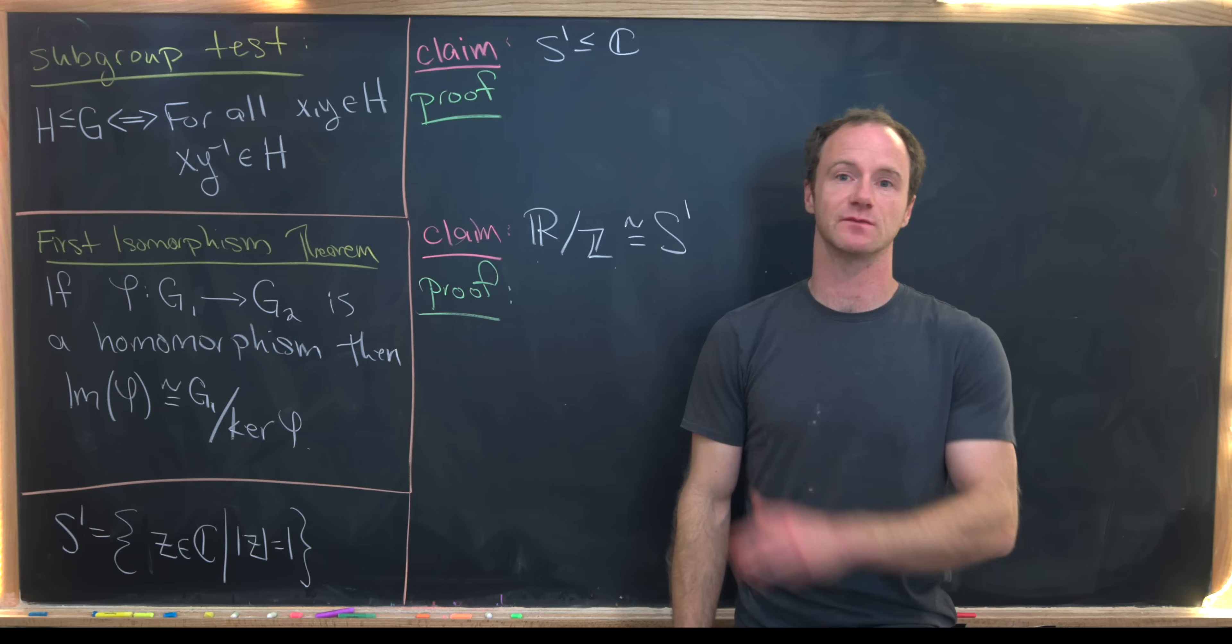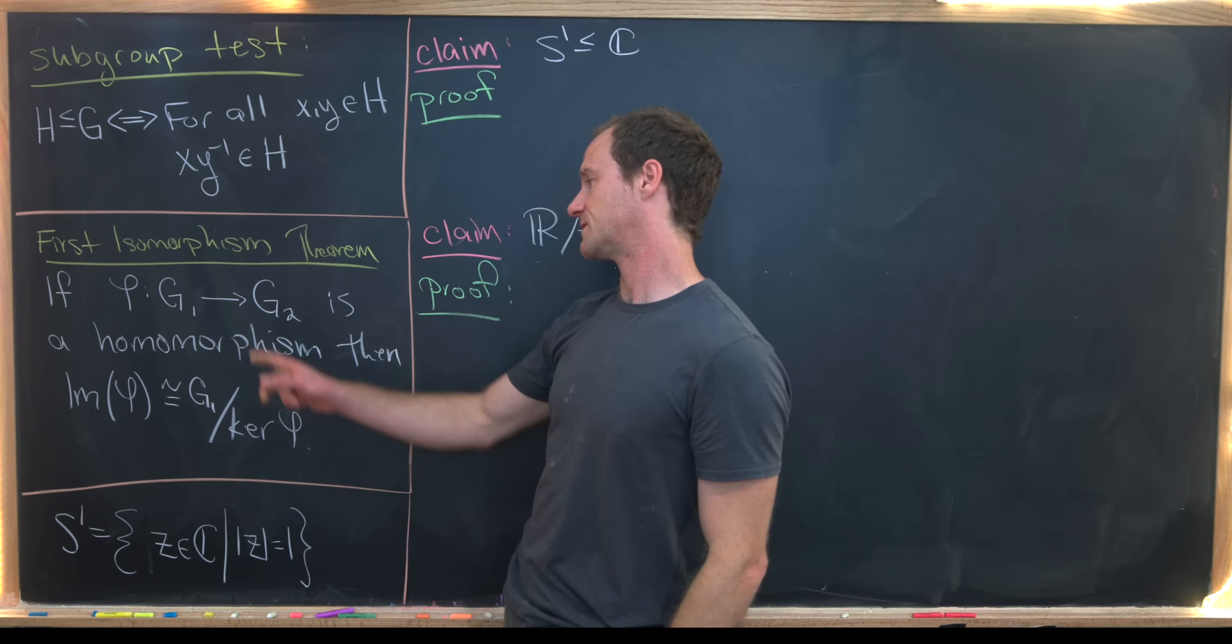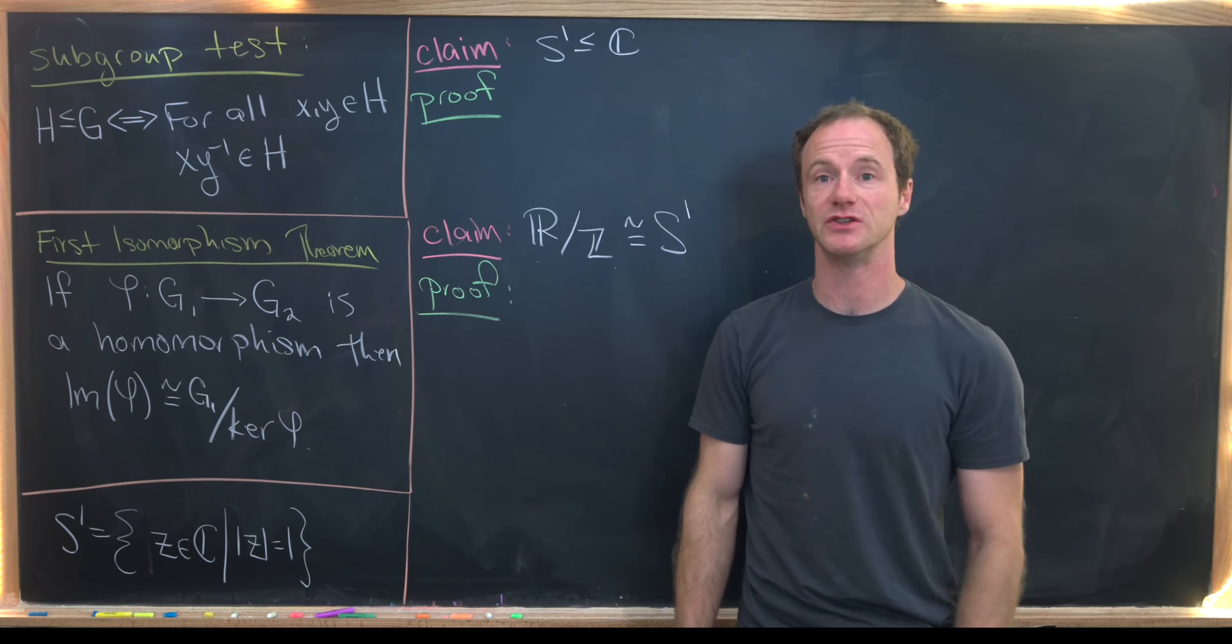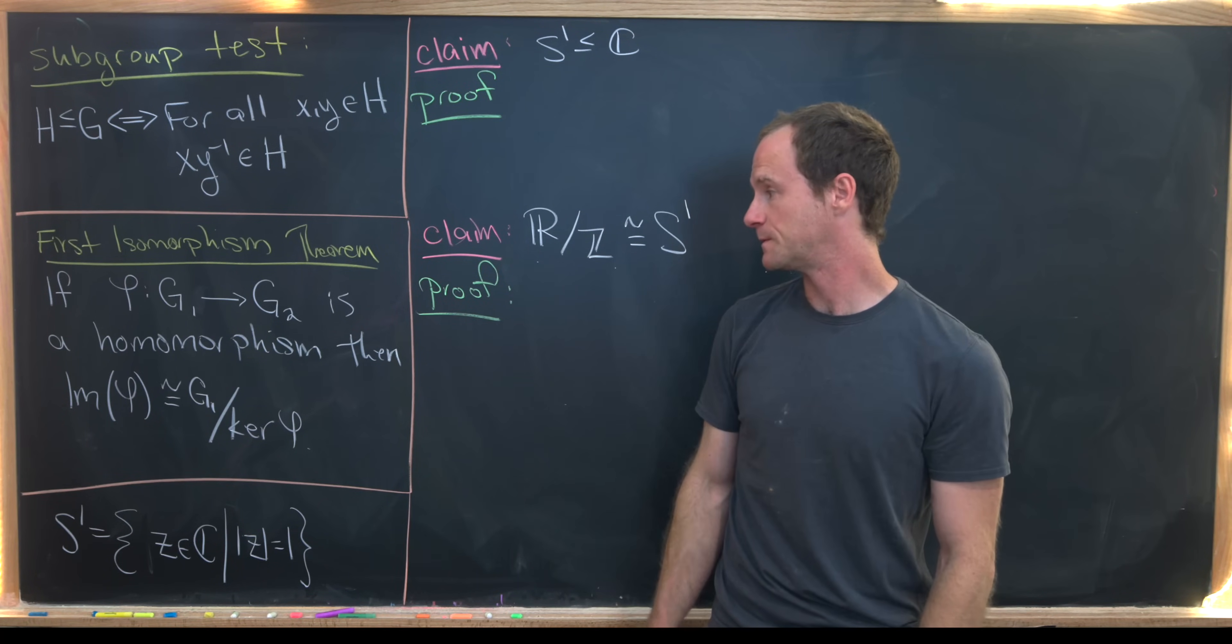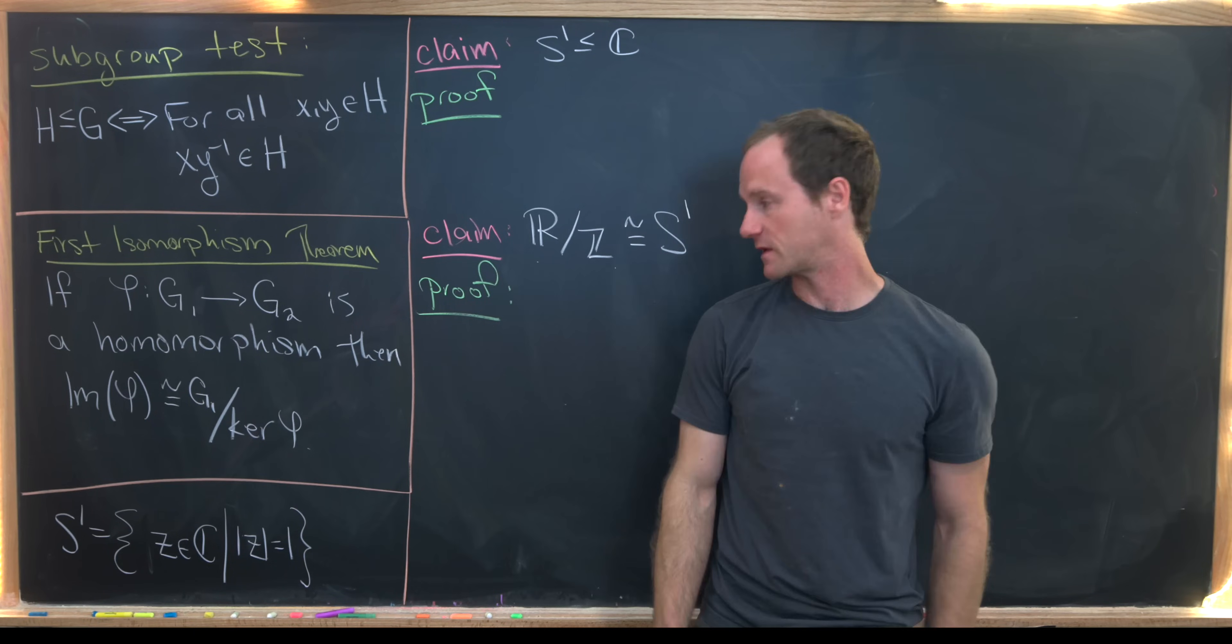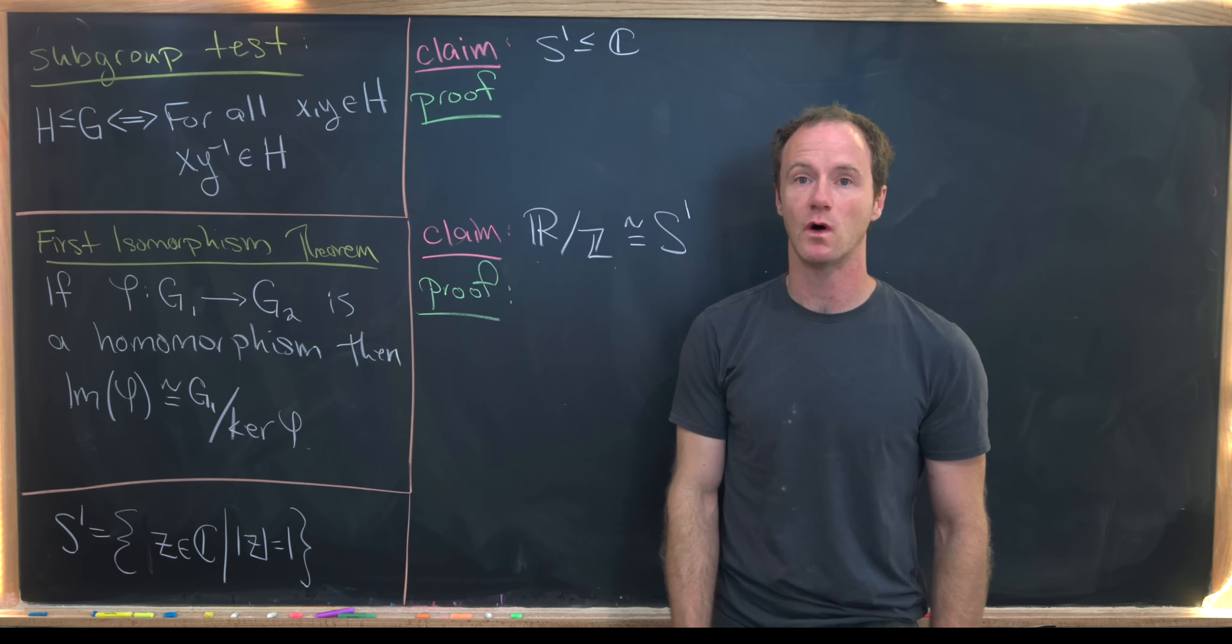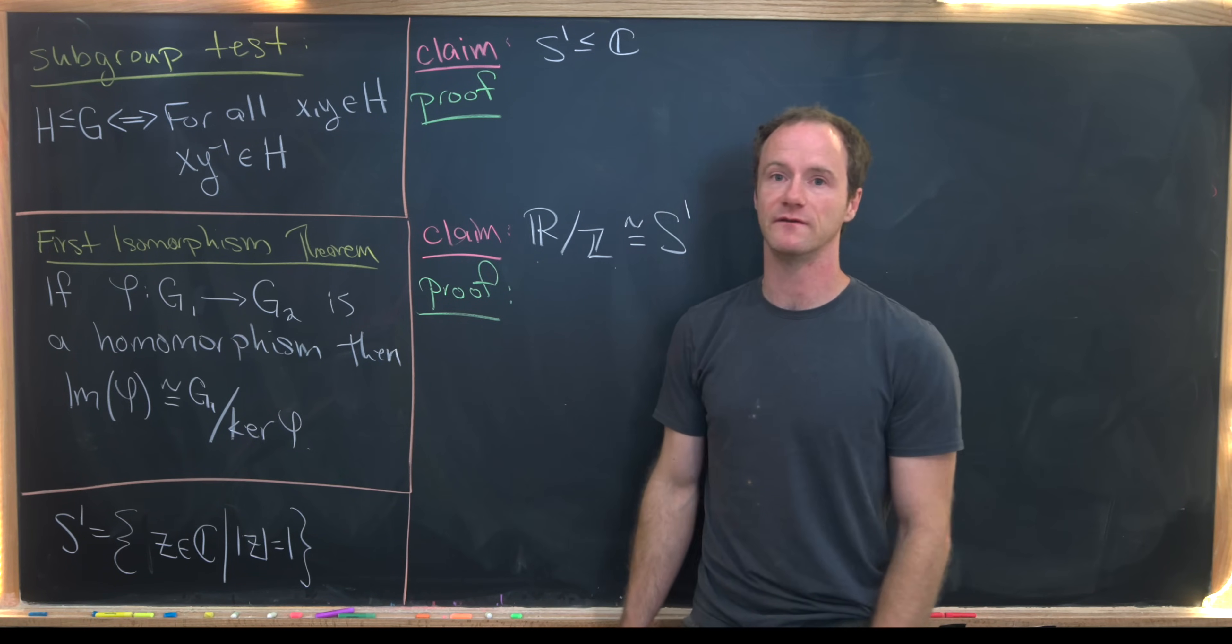Next, I want to recall the first isomorphism theorem that says if you've got a homomorphism between two groups, I've called them G1 and G2, then the image of that homomorphism, which I'm calling phi, is isomorphic to G1 mod the kernel of phi.